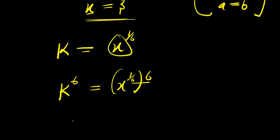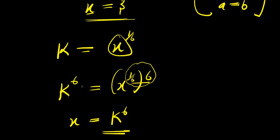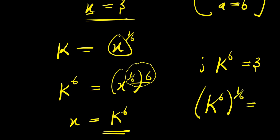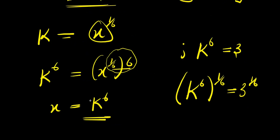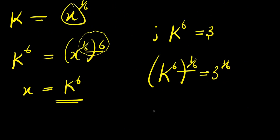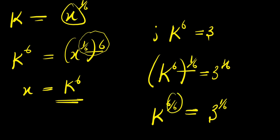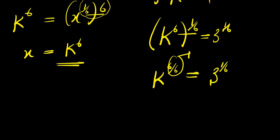I multiply the exponent: 6 over 6 equals 1, so that gives k power 6 equals x. Since we multiply and it cancels, we have x equals k power 6. And since x equals 3, that means k power 6 equals 3. Taking both sides to the power of 1 over 6: k power 6 raised to 1 over 6 equals 3 power 1 over 6. Multiplying: k power 6 times 1 over 6, that is 6 over 6 which is 1, equals 3 power 1 over 6. So k equals 3 power 1 over 6.